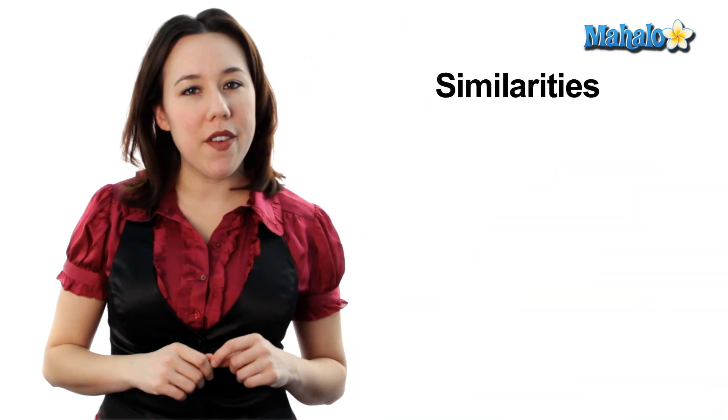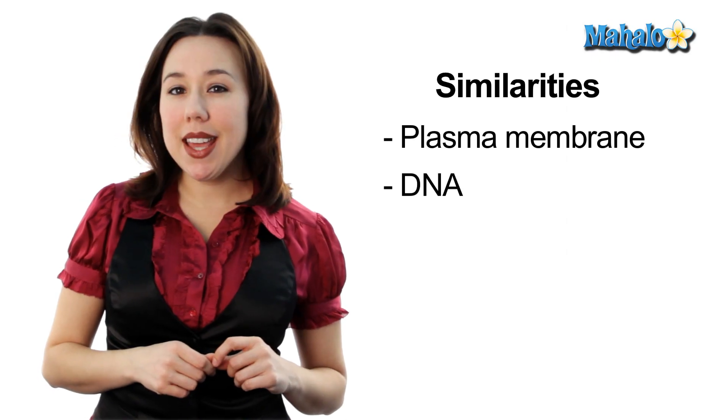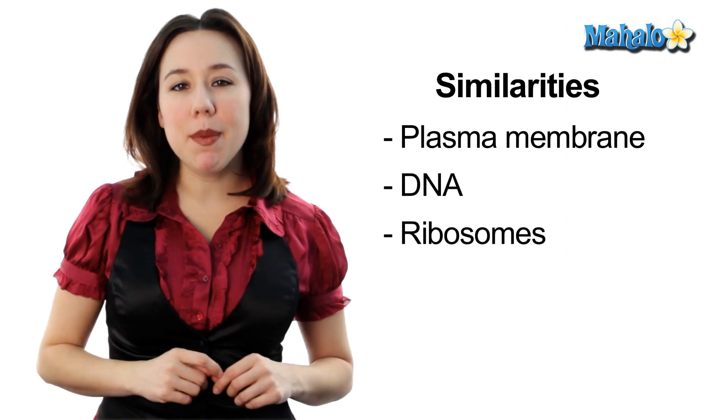All cells will have a plasma membrane, DNA, and ribosomes that make proteins. Now let's talk about the differences between these two major types of cells.